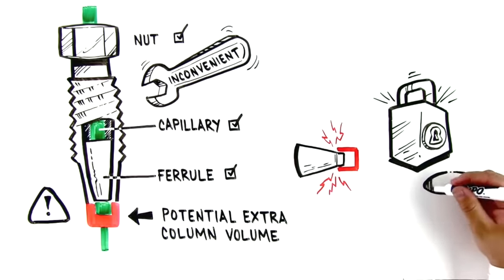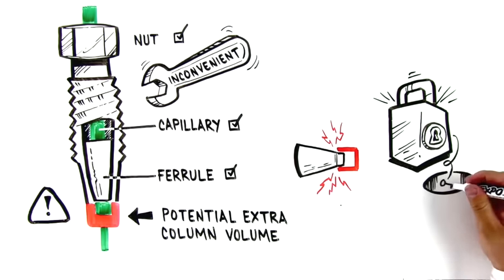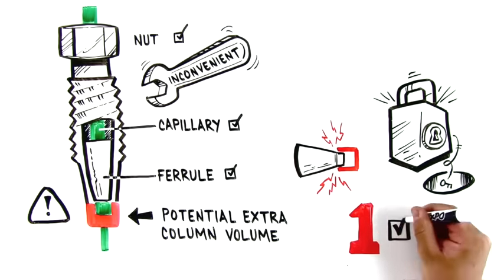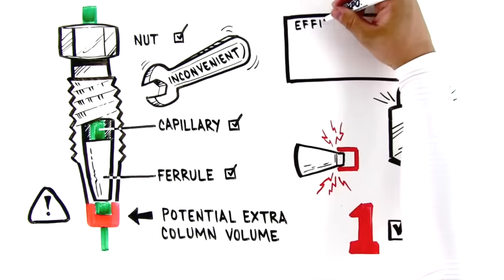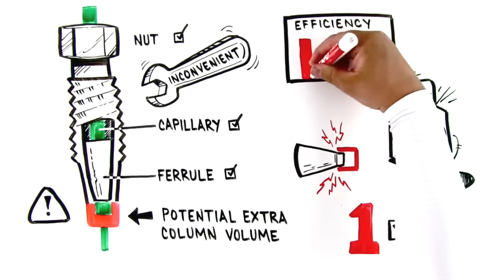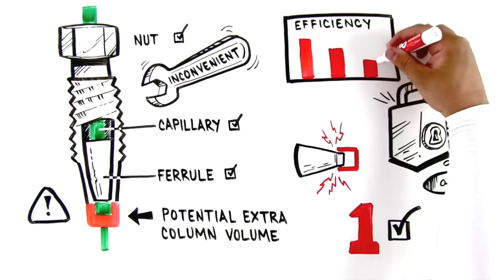A ferrule-based fitting therefore only fits best on exactly the column or valve it's first connected to. This bears the inherent risk of unwanted void volumes in the fluidics, which will immediately negatively impact the efficiency.